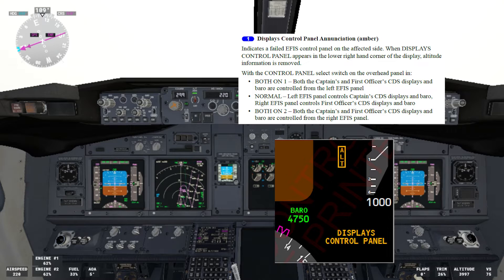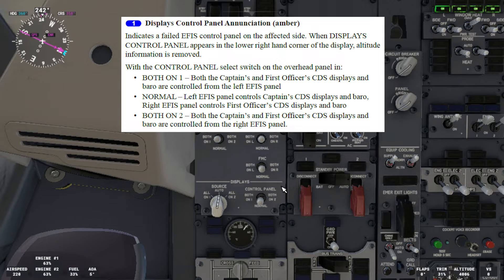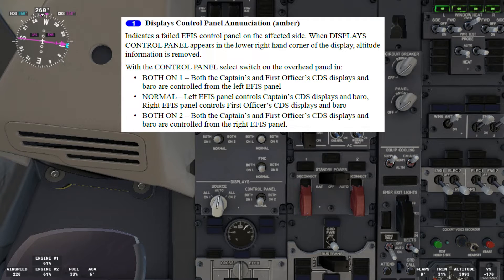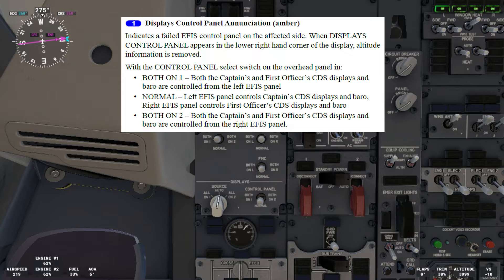Before we continue, let's go to the overhead panel. With the control panel select switch in both on one, both the captain's and first officer's CDS displays and barrel are controlled from the left IFIS panel. When in normal, the left IFIS panel controls the captain's CDS displays, and the right IFIS panel controls the first officer's CDS displays and barrel. Both on two means both the captain's and first officer's CDS displays and barrel are controlled from the right IFIS control panel. CDS stands for common display system.